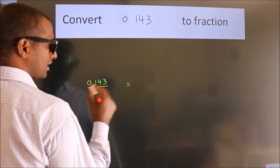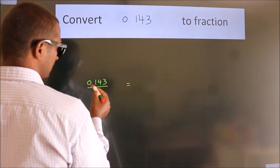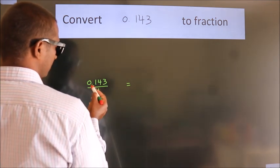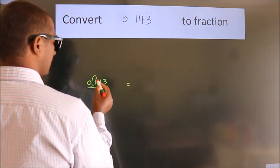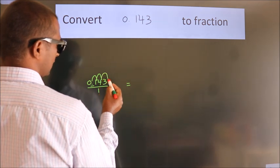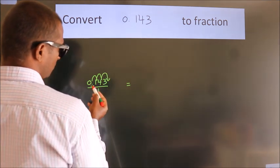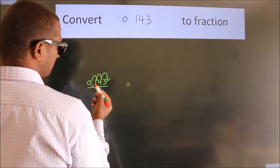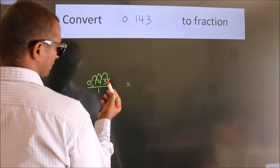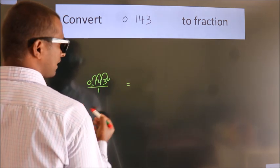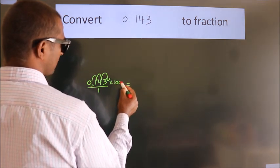we have to move the decimal after 1, 2, 3 numbers. To move the decimal after 3 numbers, we have to multiply it with 1000.